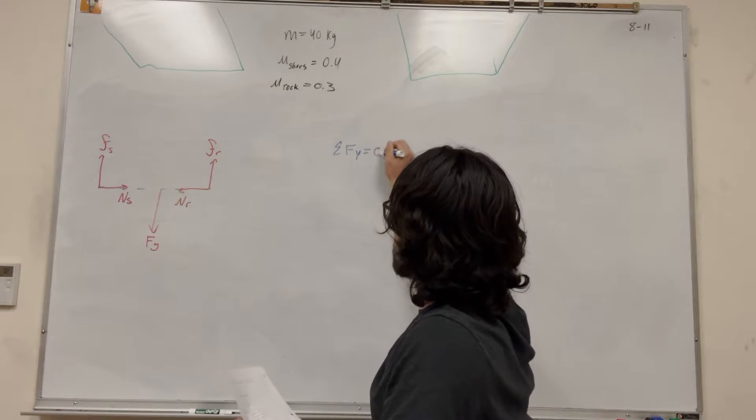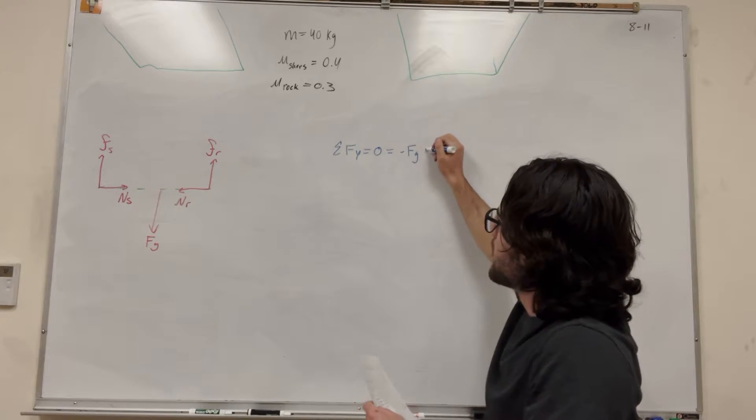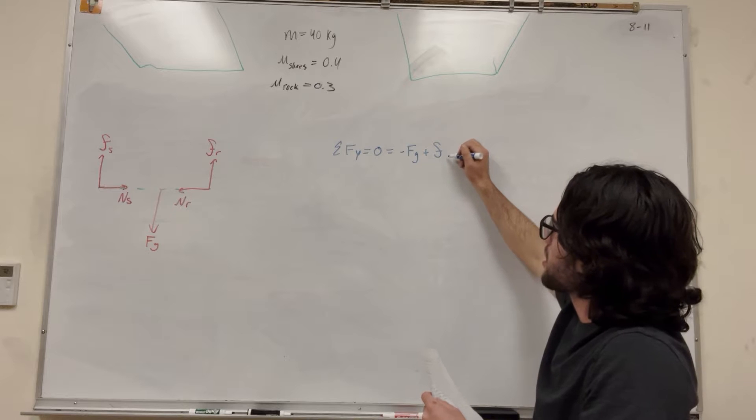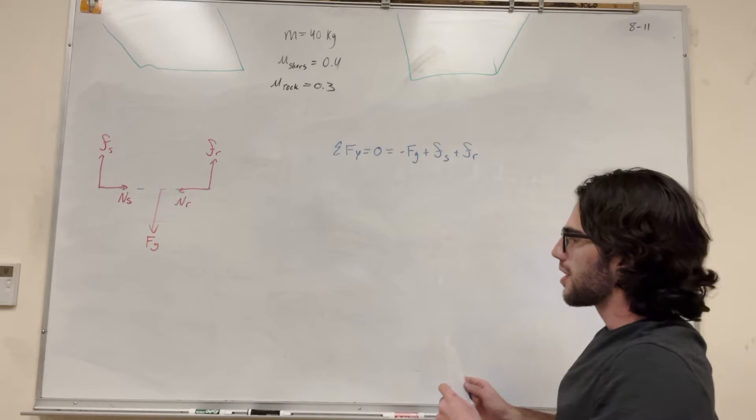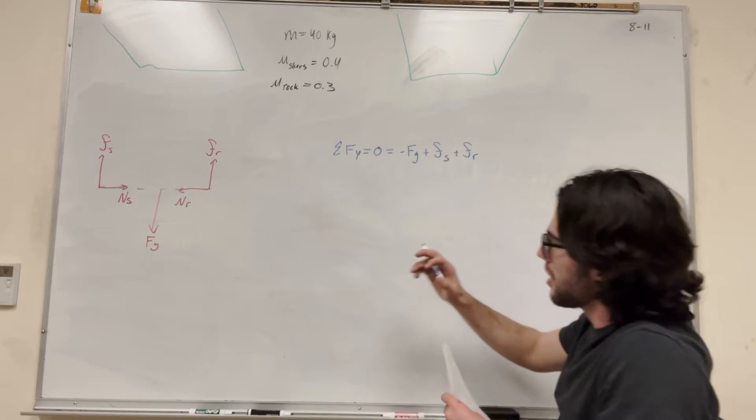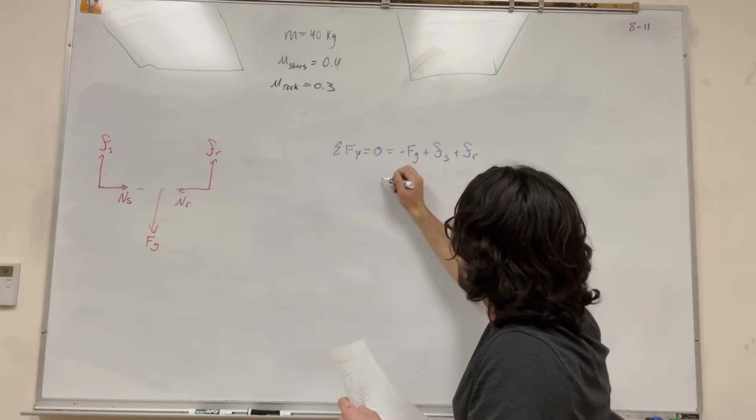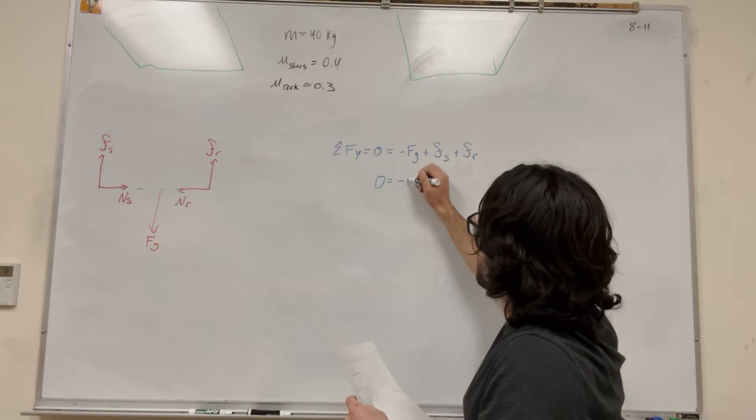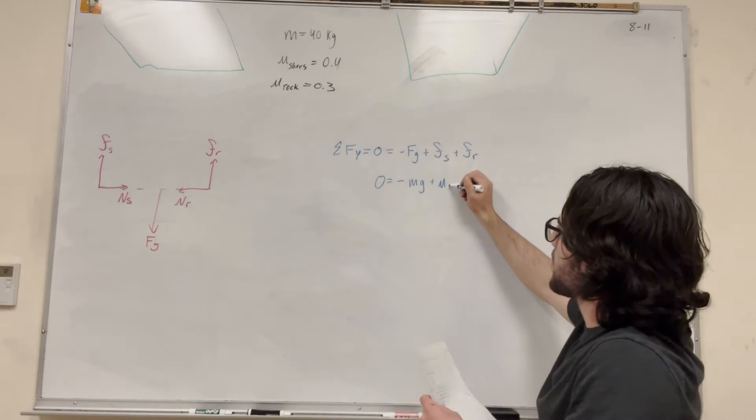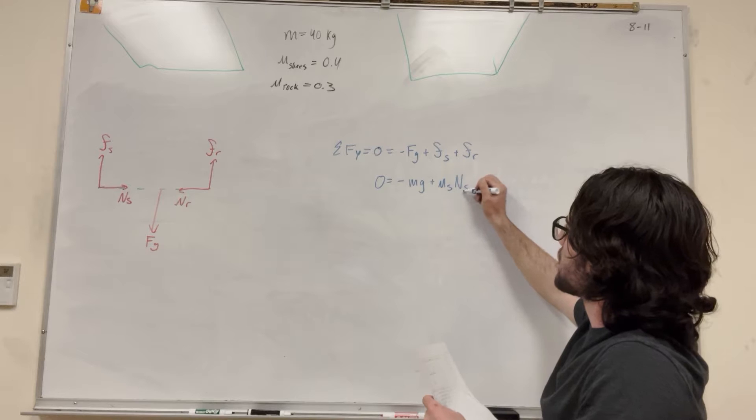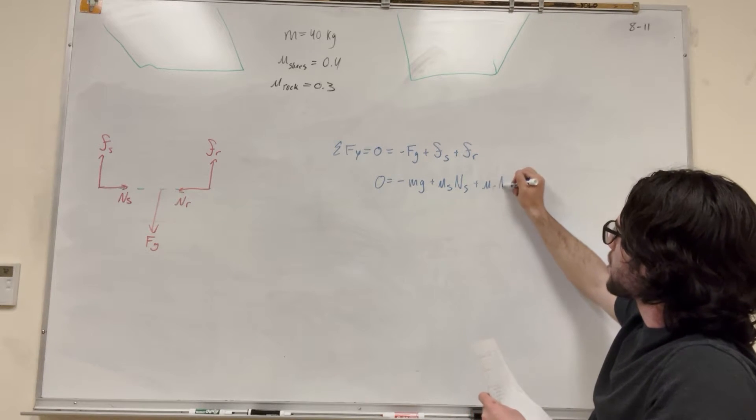Sum of the forces in the y is equal to zero. It's equal to negative force of gravity plus the force of friction between the shoes plus the force of friction between the rock. So we know that the friction is equal to normal times the coefficient of static friction. So we can label it, zero is equal to negative force of gravity. It's mass times gravity plus the coefficient of static friction between the shoes times the normal of the shoes plus the coefficient of static friction at the rock plus the normal at the rock.